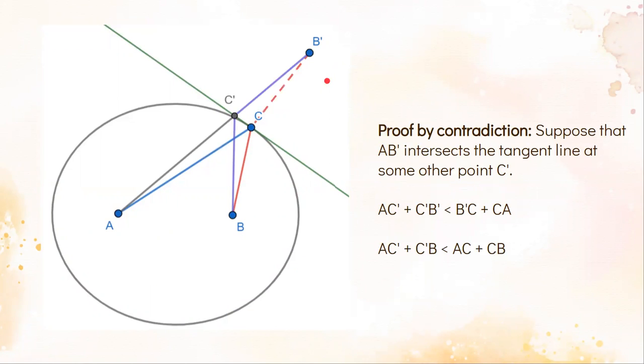We will prove this by contradiction. We will first assume that they are not collinear, and then we will find a reason why this is impossible. If they aren't collinear, then AB' must intersect the green line at some other point. We will call this point C'.